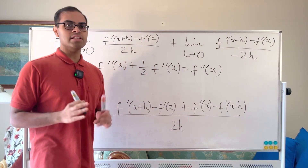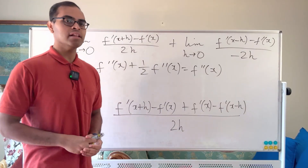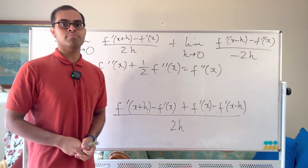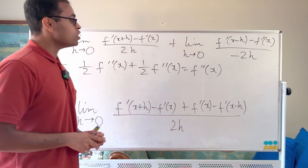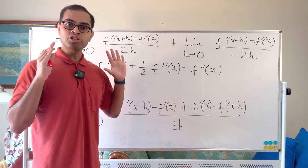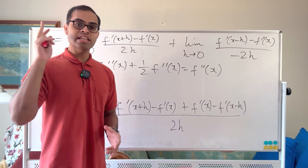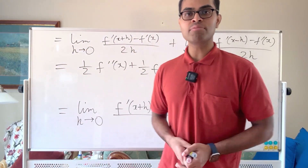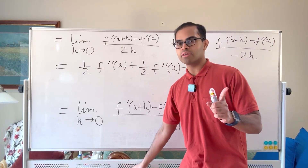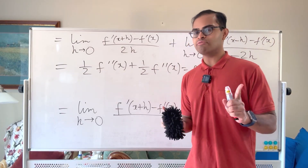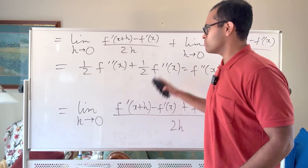Now I'm going to show you why this limit can exist even though f double prime of x does not exist — it's a super fun and beautiful example. I want you to think about it: pause for a few seconds and think about whether you can come up with such an example yourself.